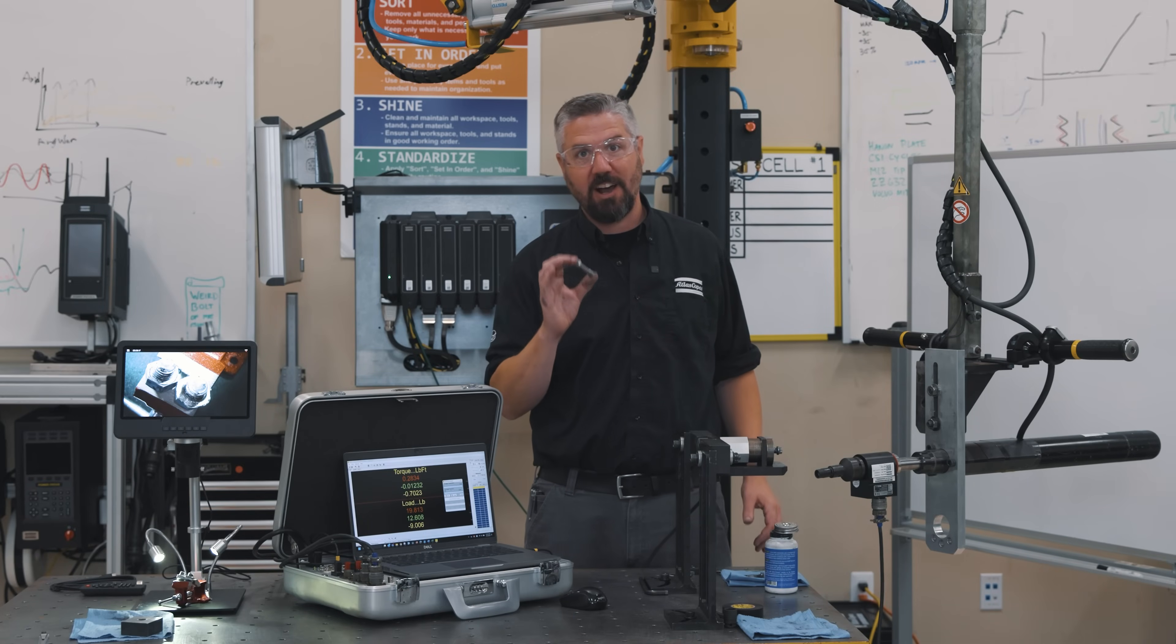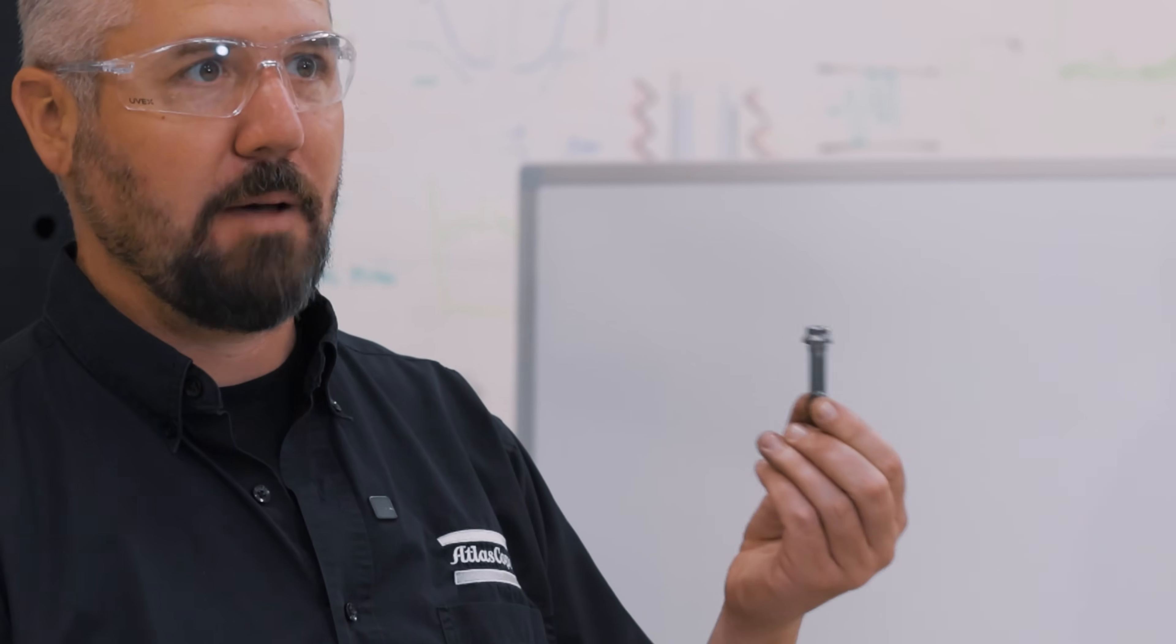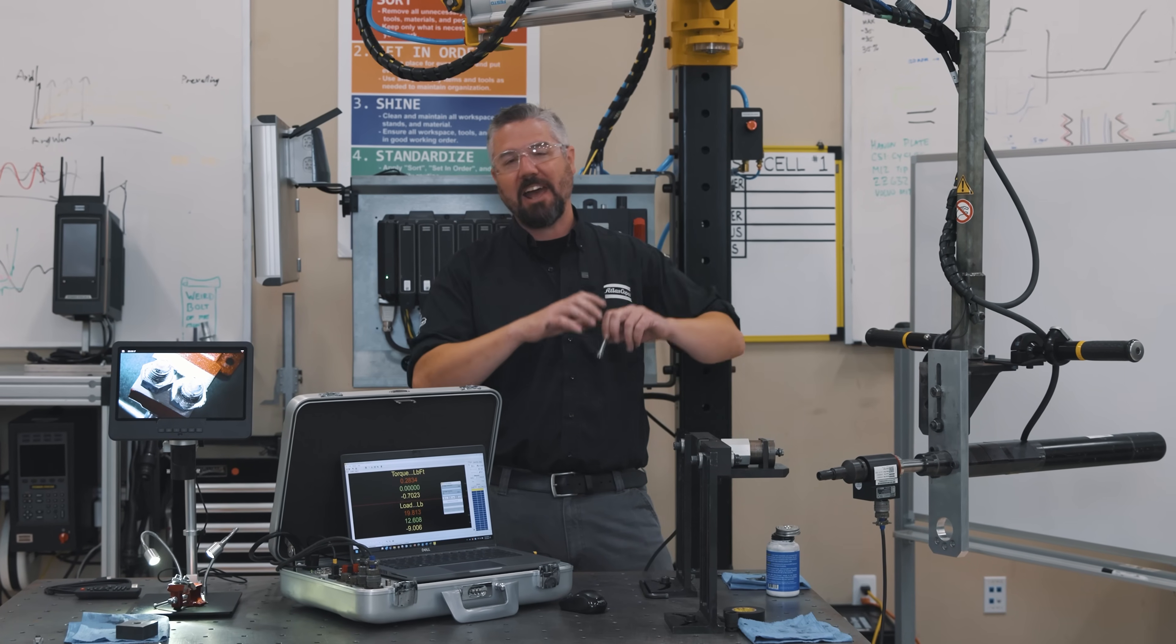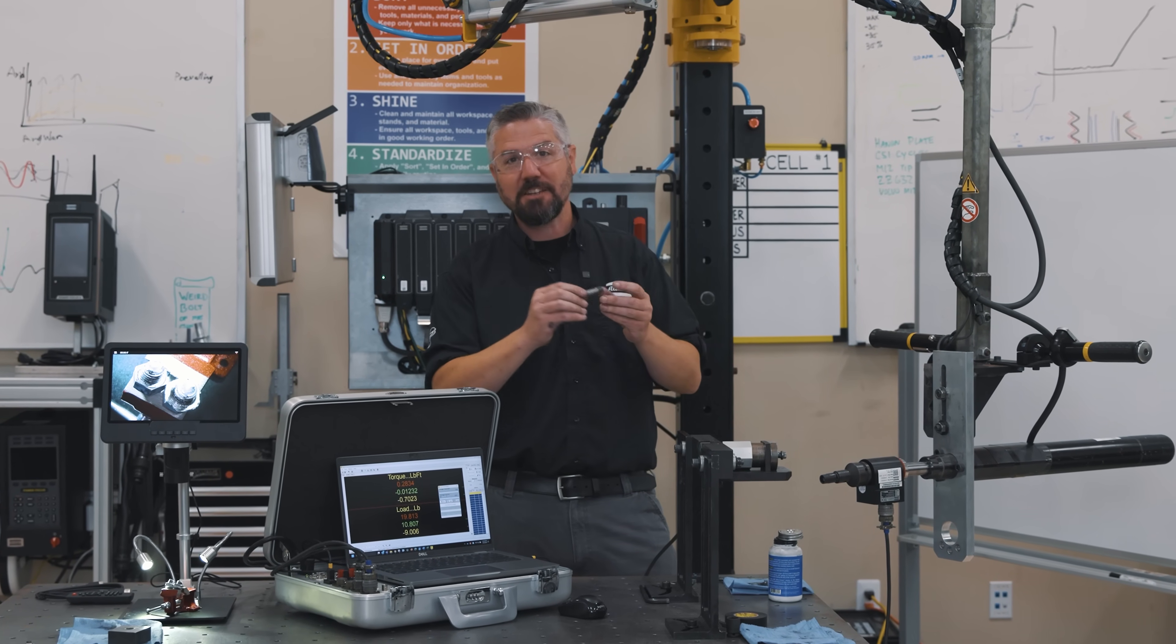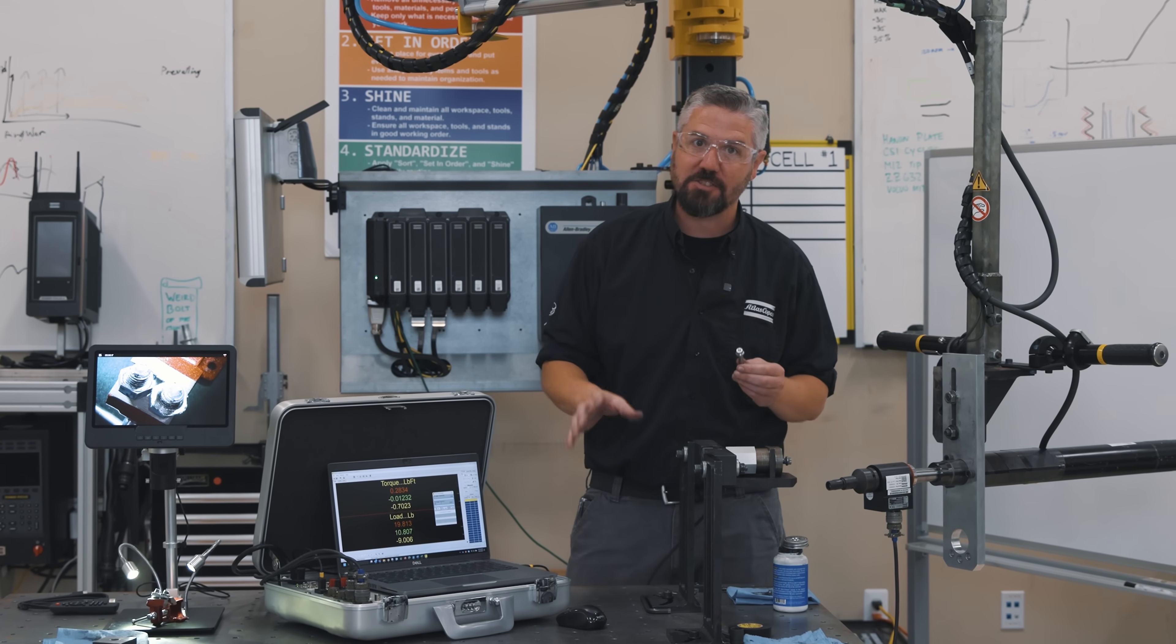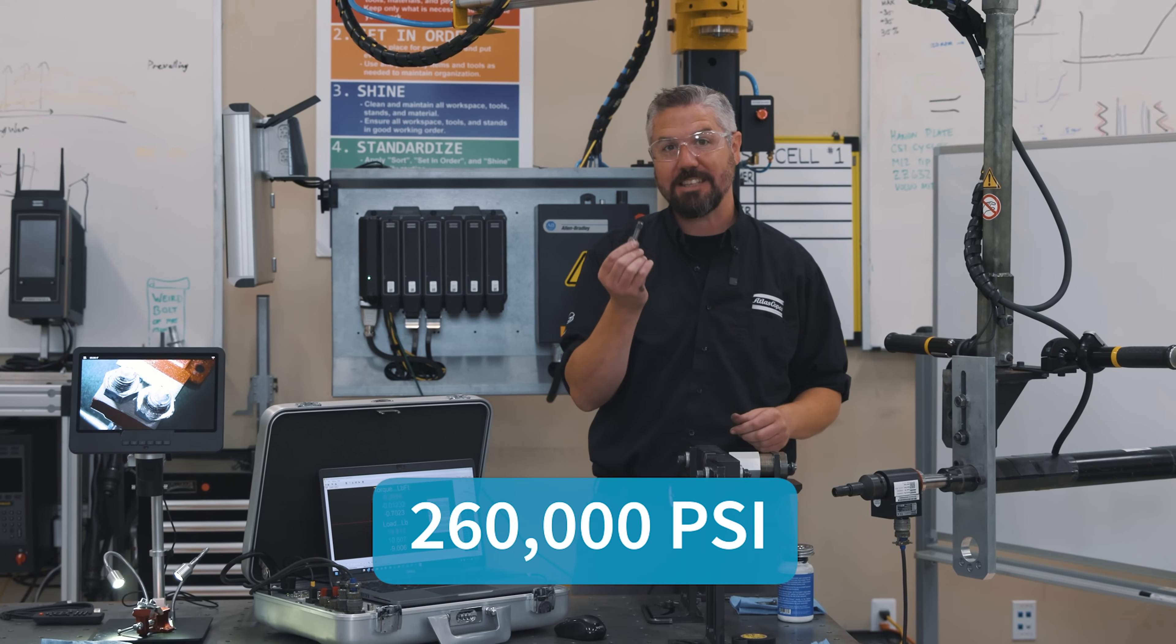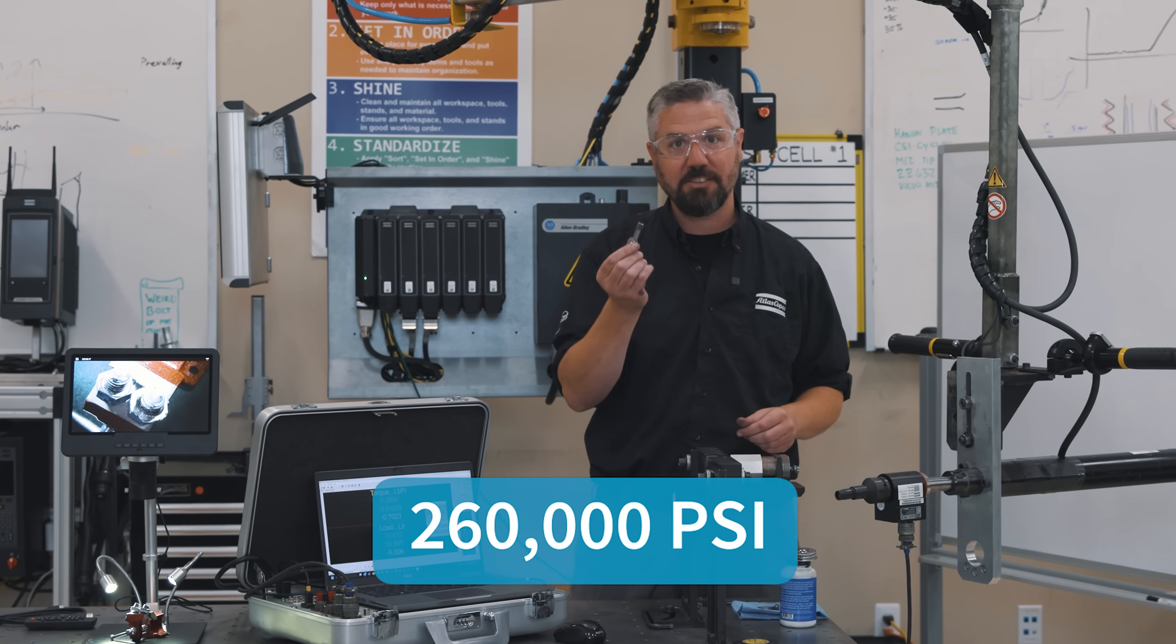Now it's time for our ultra high strength fastener. This bolt goes in the most critical applications, for a connecting rod for a race engine. If this bolt comes loose, you have catastrophic damage to the engine. This bolt has to stay tight and is made of a material that's twice as strong as our grade five bolt. This is good for 260,000 PSI of tensile strength.